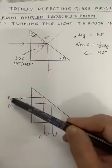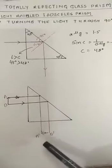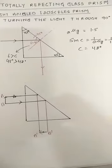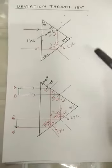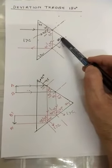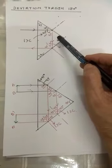And similarly, if AB is the object, then by this total internal reflection, A dash B dash will be the image of AB. Next we come to how this glass prism is used to deviate the ray through 180 degrees.